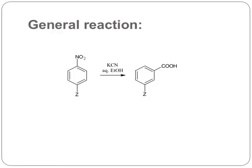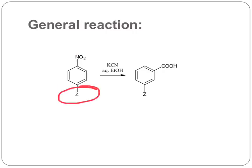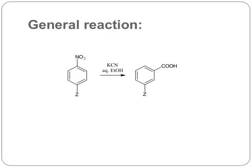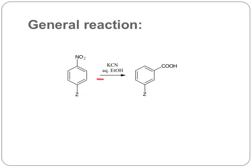In the general reaction, we take any aromatic nitro compound. Z is some electron withdrawing group such as halogens or any other group. In this example, the Z group is present at the para position with respect to the nitro group. When this aromatic nitro compound is treated with potassium cyanide in aqueous ethanol, it leads to formation of a cine substituted carboxylic acid.